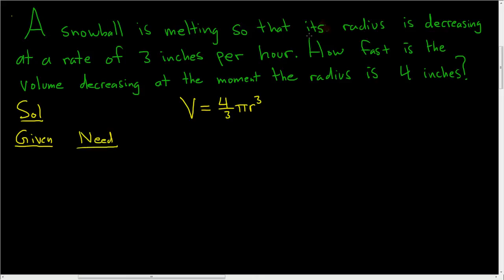We're told that the snowball is melting so that its radius is decreasing at a rate of 3 inches per hour. So if r denotes the radius, the rate of change of the radius is the derivative with respect to time.